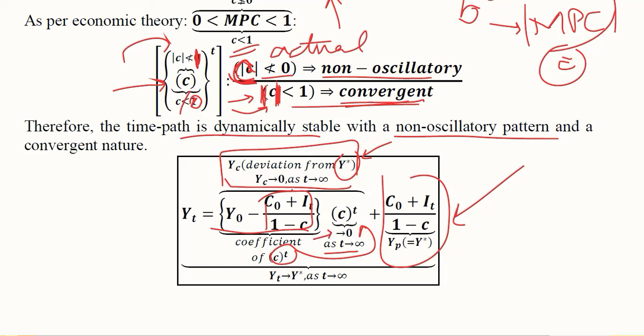This term will approach 0 as time passes indefinitely. This means the time path will converge to the equilibrium value as t approaches infinity.